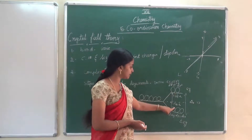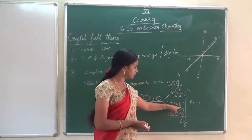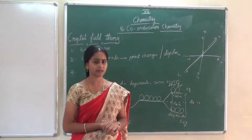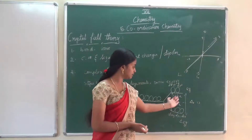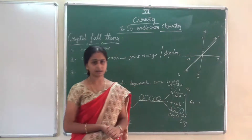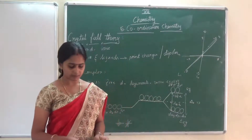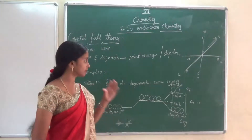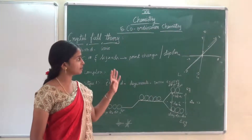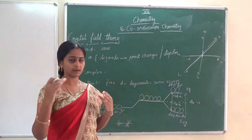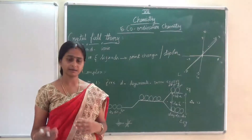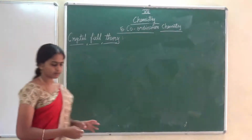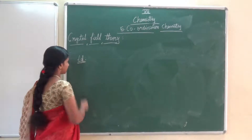Next, we are going to see crystal field splitting in a tetrahedral complex. The same principle applies. In an octahedral complex, ligands approach along the axis. Now we will see the same for the tetrahedral field. In a tetrahedral complex, the central metal atom starts in the gaseous state with all five d-orbitals degenerate.